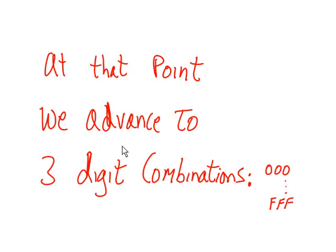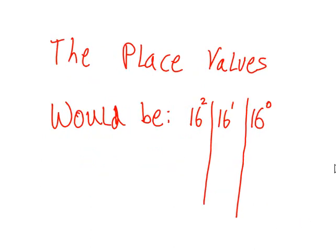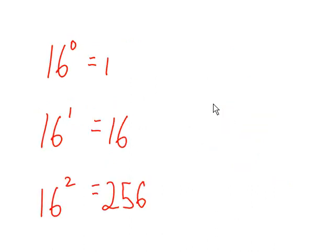At that point, we advance to three-digit combinations: 000 through FFF. The place values would be 16 to the 0, 16 to the 1, and 16 to the 2 power. 16 to the 0 equals 1, 16 to the 1 equals 16, and 16 to the 2 power equals 256.